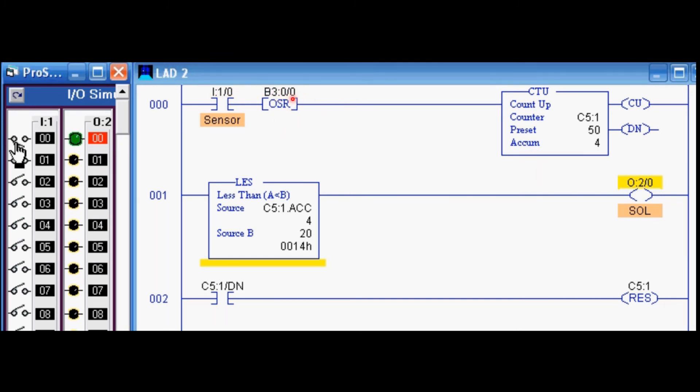In RS Logix 500, the program is somewhat like this. OSR is the one-shot relay. Whenever the operation starts, we count up to 19, this is on. But as soon as it becomes 20, it will become off. It will remain off up to 50.